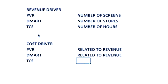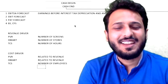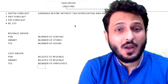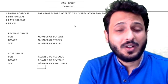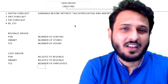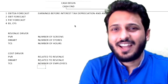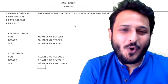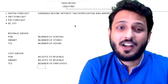For TCS, number of hours is the revenue driver and number of employees is the cost driver. Understanding revenue drivers and cost drivers is a very important part of financial modeling. Whenever you make a new model for a different company or industry, you need to go deep into how they earn revenues, what segments exist, what the drivers are, and how costs will change.